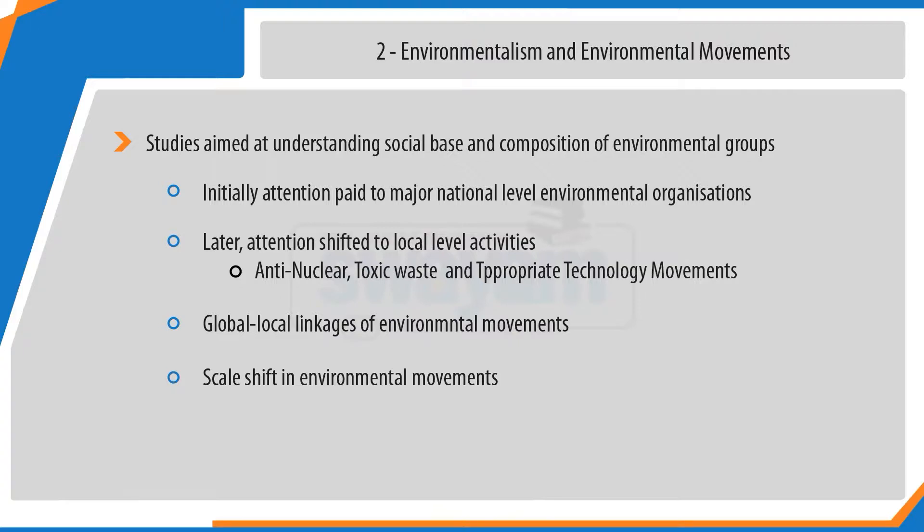The study of environmental social movements has paid attention to understanding the global-local linkage of these environmental movements. Another important factor has been understanding the scale shift in environmental movements. Environmental movements sometimes may begin at a particular location, but they do not remain local — sometimes they become global movements. How does the scale of these environmental movements shift from being a localized struggle to a global social movement? Examples include movements against deforestation and movements against water pollution — while these movements may begin with certain localities, they turn out to be global movements.